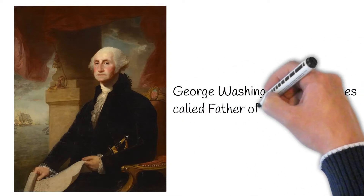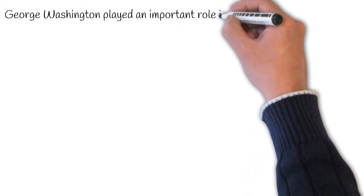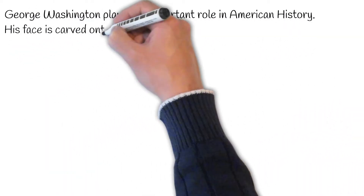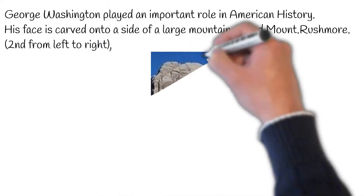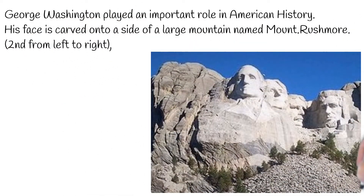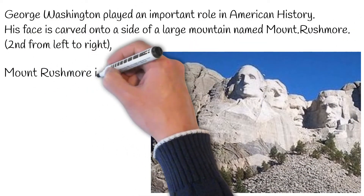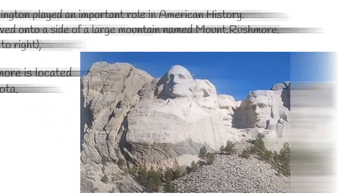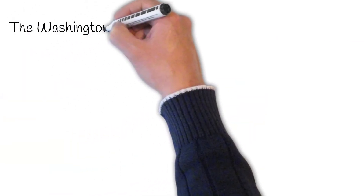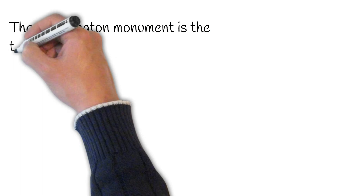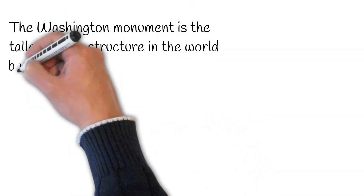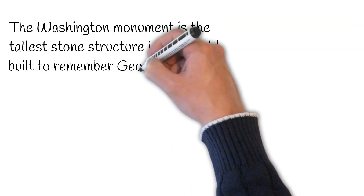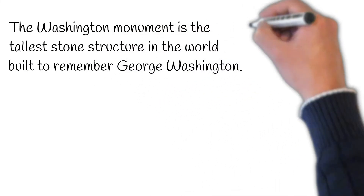George Washington is sometimes called the father of our country. George Washington played an important role in American history. His face is carved onto the side of a large mountain named Mount Rushmore, which is located in South Dakota. The Washington Monument is the tallest stone structure in the world, which is built to remember George Washington.